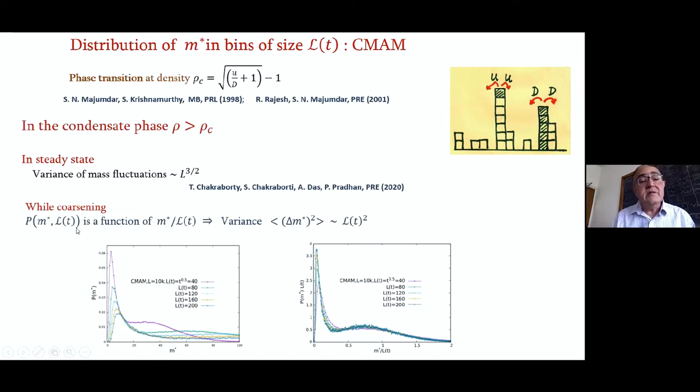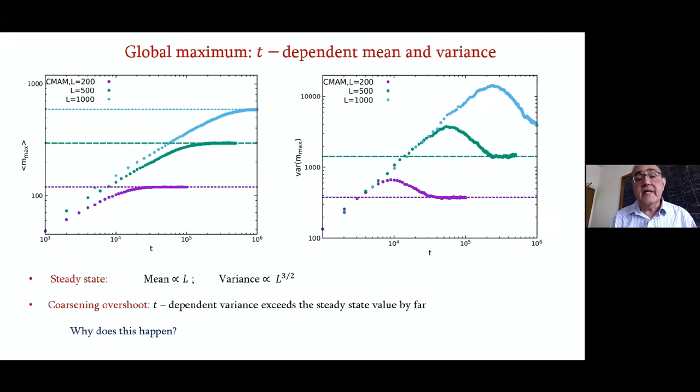But while coarsening, again, this distribution is a scaling function, which again means that delta M star squared grows like L(t) squared. Here's the evidence for that. And again, let's ask how the mean and the maximum grow. The mean saturates very nicely monotonically to its final value. But once again, the variance shows the strong overshoot before it comes and settles to L to the three by two.